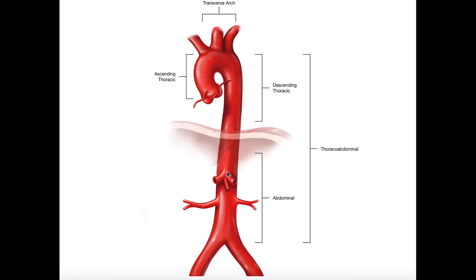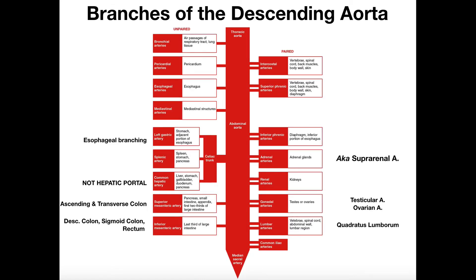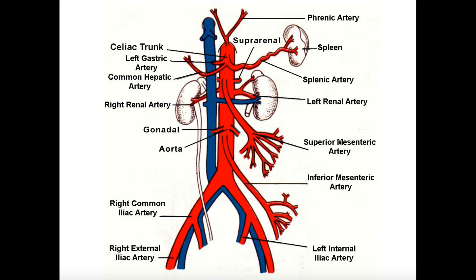The abdominal aorta continues until a bifurcation at the bottom, where it splits into the common iliac arteries. Once we get to that bifurcation, we no longer consider it the abdominal aorta. I've got three different figures here that we're going to look at, and each one has an advantage, so we'll be flipping between them.